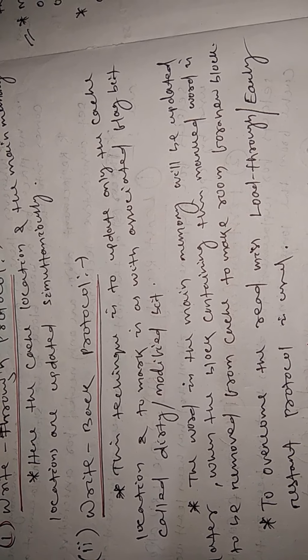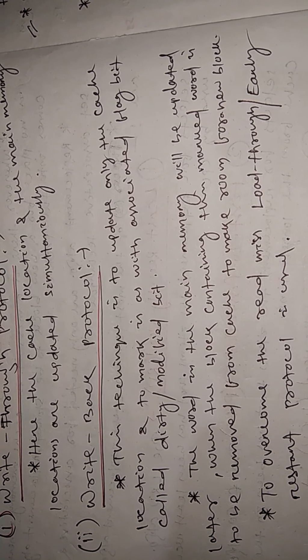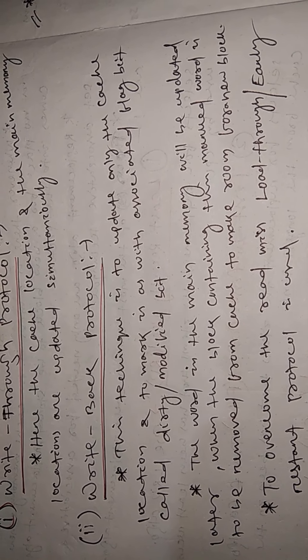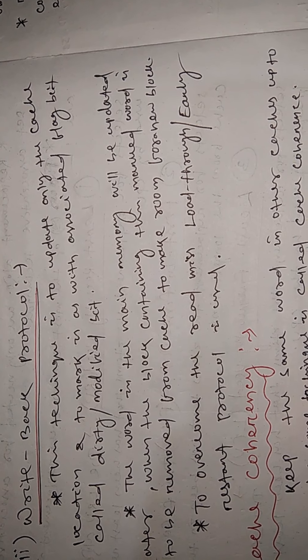Cache replacement algorithm is nothing but replacing the older blocks, or the blocks which are not in use for a long time, so that new space will be generated for the incoming blocks. There are four types of cache replacement algorithm: LRU, FIFO, LFU, and random.